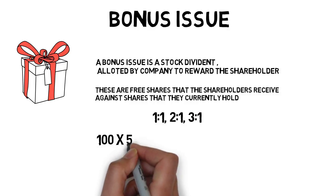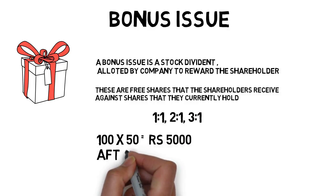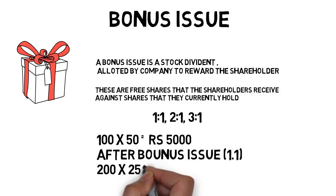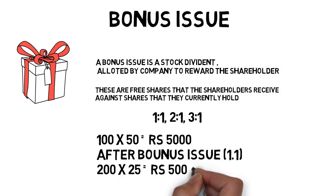If I hold 100 shares and the current value is 50 rupees per share, my value of investment is 5000 rupees. After a bonus is declared at 1:1, I will now have 200 shares — 100 additional — and the per share value becomes 25 rupees. The value per share decreases, but my total value of investment remains 5000 rupees while outstanding shares have increased.